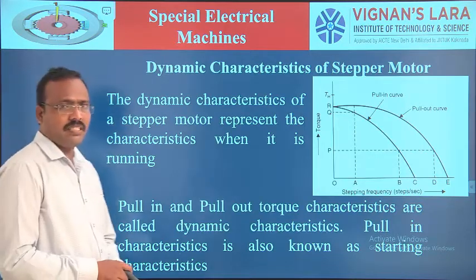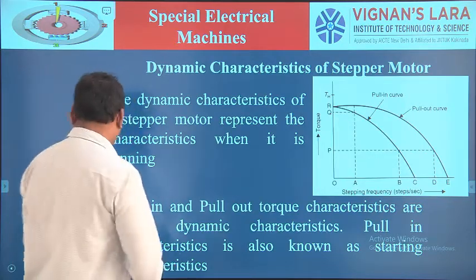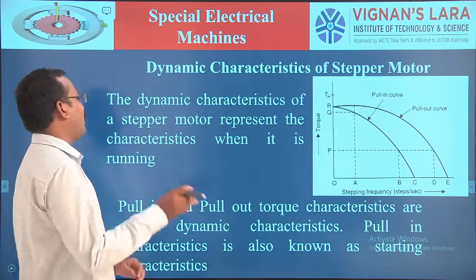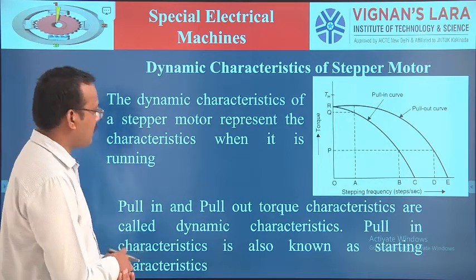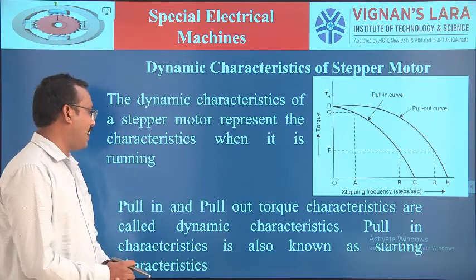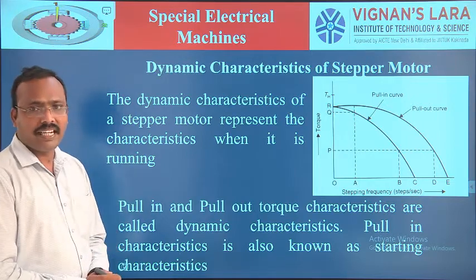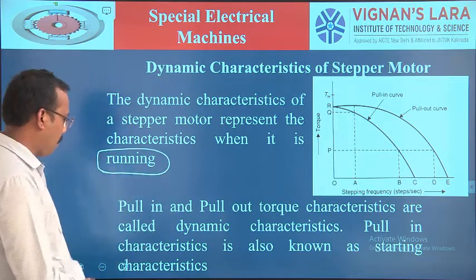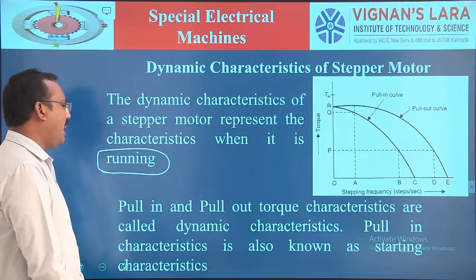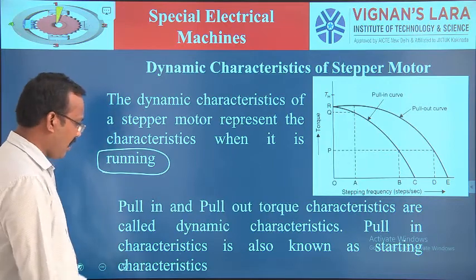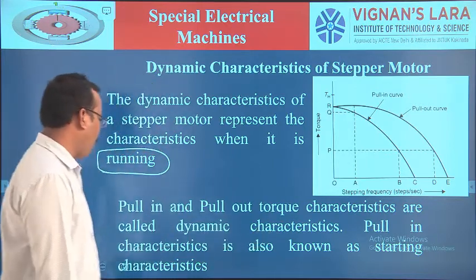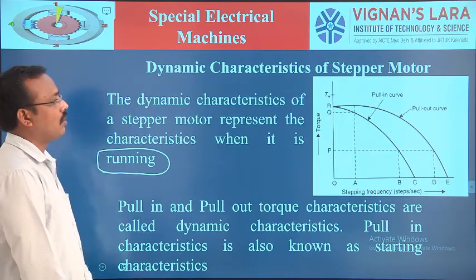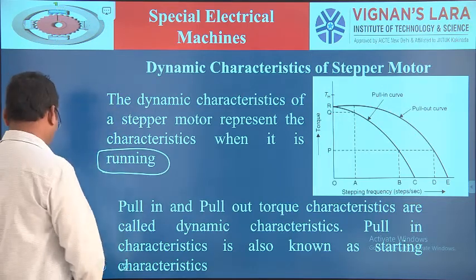The next one is dynamic characteristics of stepper motor. The dynamic characteristics represent the characteristics when the motor is running — also called the running characteristics. Pull-in and pull-out characteristics are called dynamic characteristics. The pull-in characteristic is also known as the starting characteristic of the stepper motor.